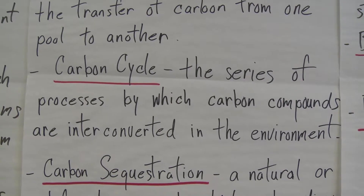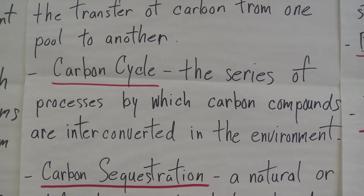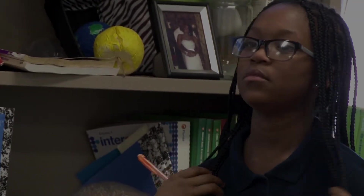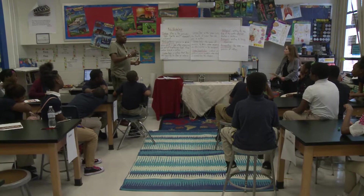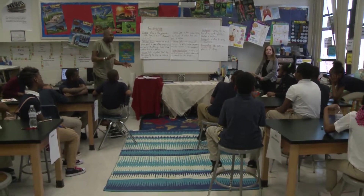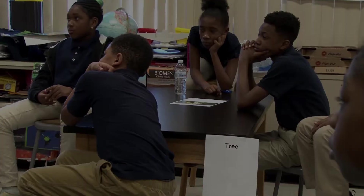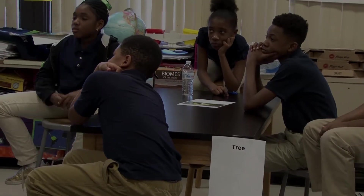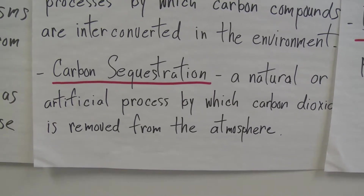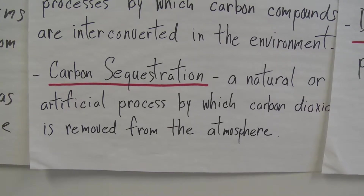Carbon cycle: the series of processes by which carbon compounds are inter-converted in the environment. Inter-converted — that means how it's kind of converted from one form to another. It's always carbon, but it could be carbon that is stored in a tree. Trees can take carbon out of the air. Carbon sequestration is when trees take carbon out of the atmosphere.